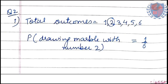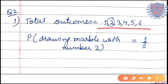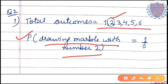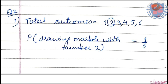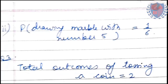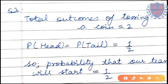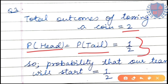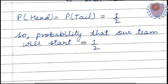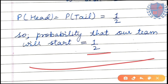Question 2: 6 marbles in a bag are numbered 1 to 6, so total outcomes = 6. Probability of drawing marble with number 2 = 1/6, since number 2 appears only once. Probability of drawing marble with number 5 = 1/6. Last question: total outcomes of tossing a coin = 2. Probability of getting head = 1/2, probability of getting tail = 1/2. So the probability that our team will start is 1/2. Thank you students.